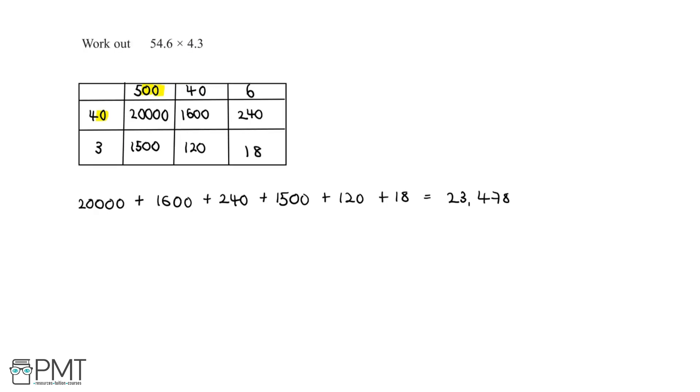So now we need to work out where the decimal point goes in our final answer. The numbers that we started off with were 54.6 and 4.3, and we manipulated these numbers to get 546 and 43. So we need to go back and figure out what it is that we did.